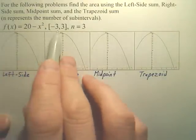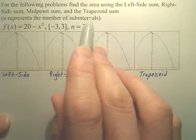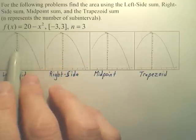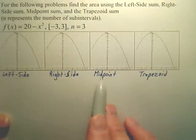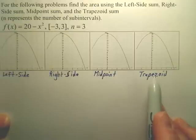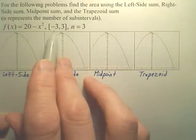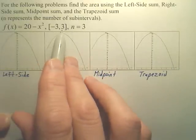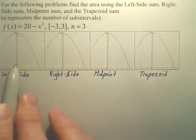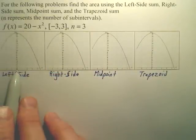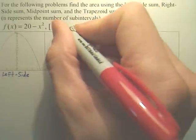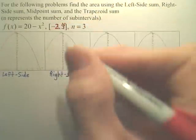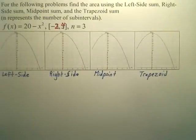We're going to find the approximate area underneath these curves, which is this equation, using four different types of methods. We're doing three sub-intervals, and we're going to integrate from negative two — actually, I didn't change that — to four is where we're going to go. I forgot to change that. So, from negative two to four.